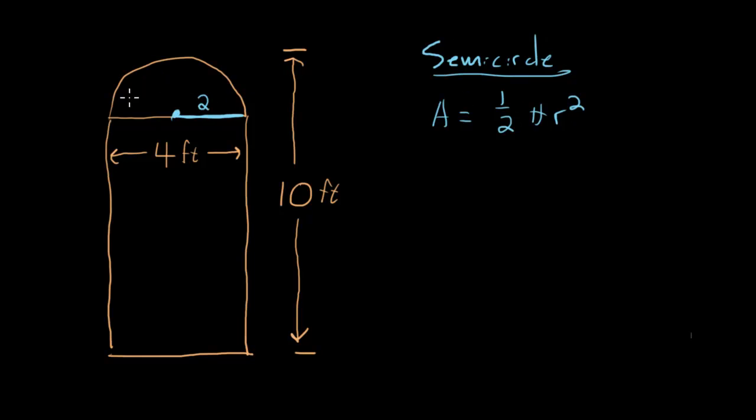We can now find the area of the top of this window. The area of the top of the window is ½π(2)², which is the same as ½π(4), and a half times four is two. So my area is 2π.